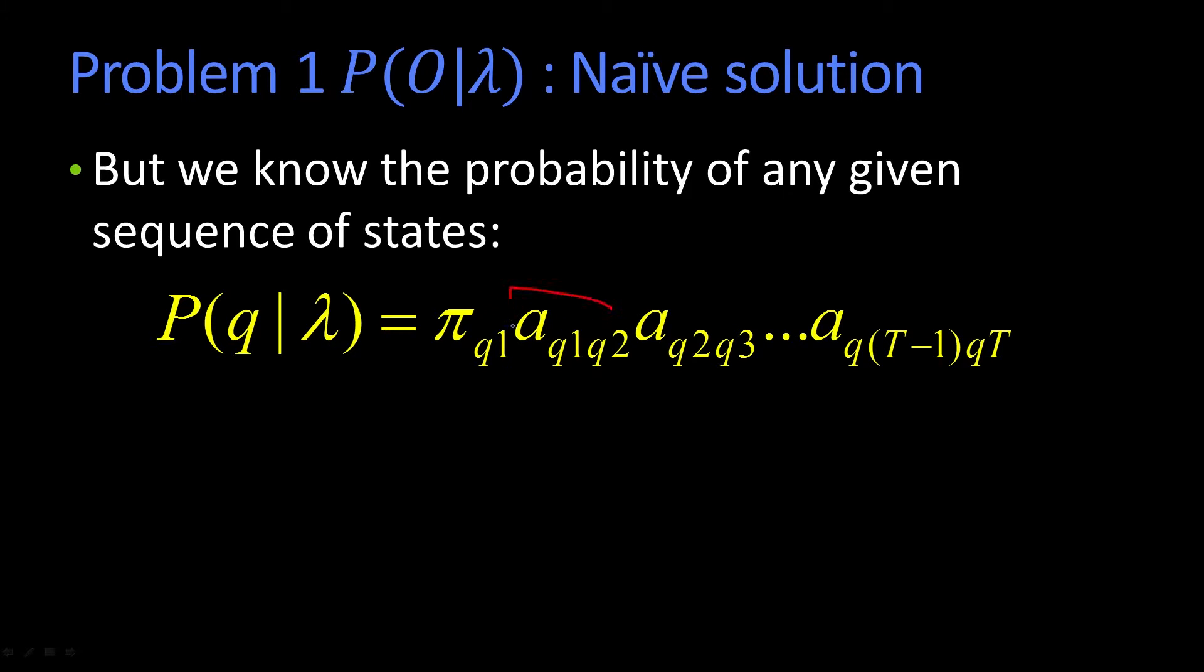And then a of q1 q2 is the probability of going from that state q1 to whatever the next state q2 is, times a q2 q3, all the way up to a q T minus 1 to q T. So assuming I knew the sequence, I could tell you the probability.